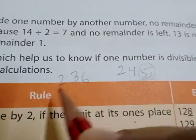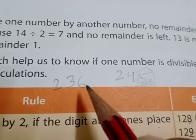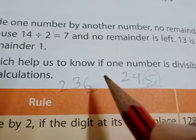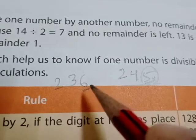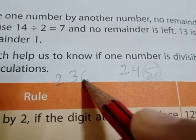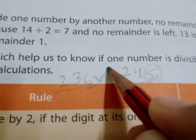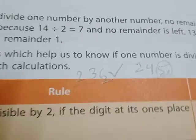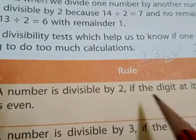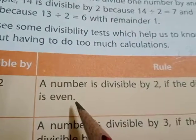Now take the number 236. Look at its one's place — the digit is six. Six is an even number, so the one's place is even. This means the number 236 is divisible by two.